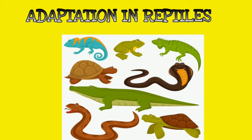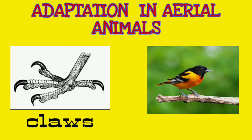Adaptation in aerial animals — how animals fly. Birds have a spindle-shaped body that reduces air resistance while flying. Their bones are hollow, making the body very light. Their body is covered with feathers and their forelimbs are modified into wings. These are the main reasons why birds can fly.